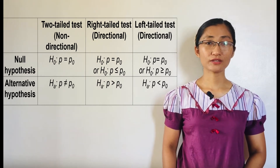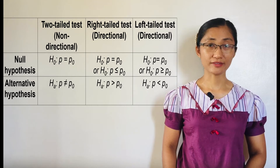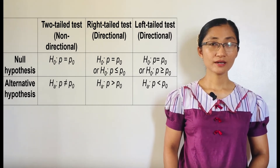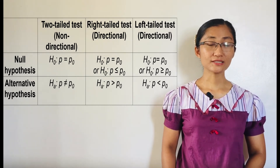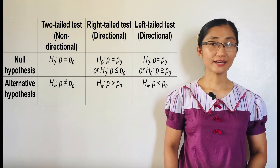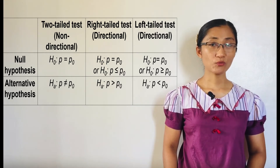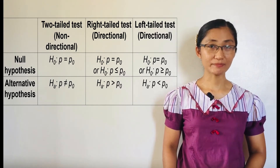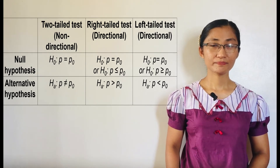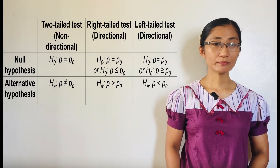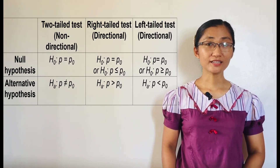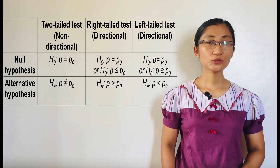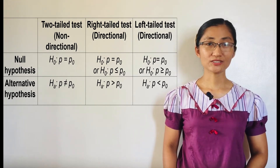It is a statement of inequality using symbols greater than, less than, or not equal. Hypotheses are mutually exclusive — that is, if one is rejected, the other must be accepted, and vice versa. The table beside me shows the null and alternative hypotheses, including directional tests.